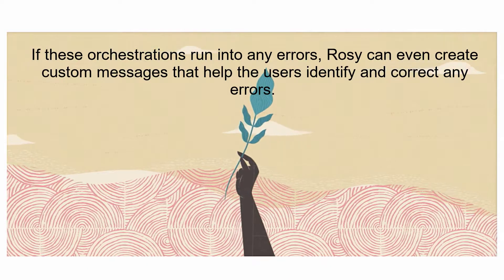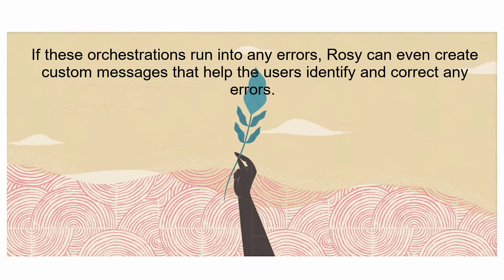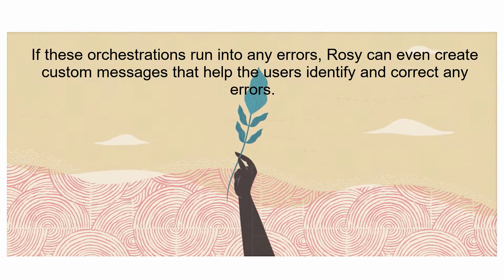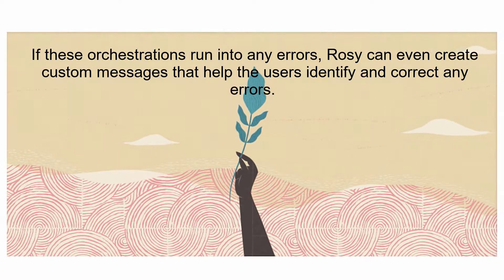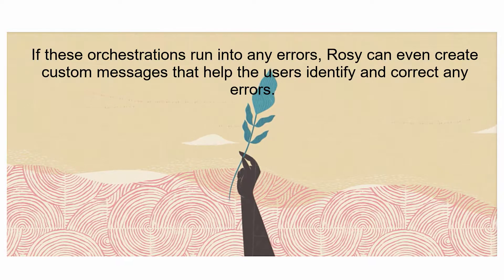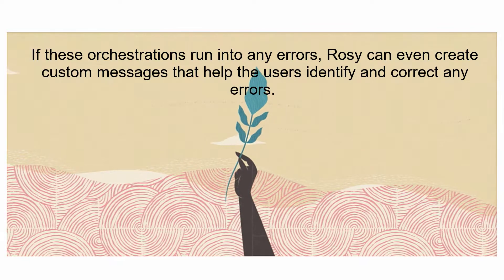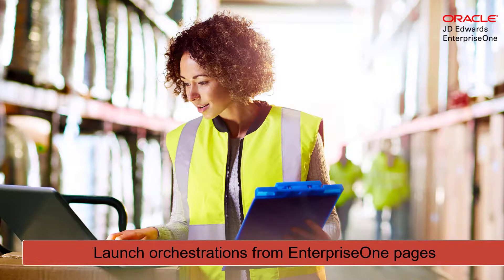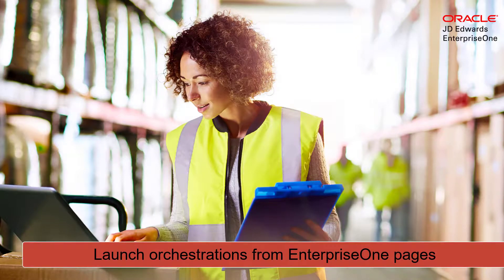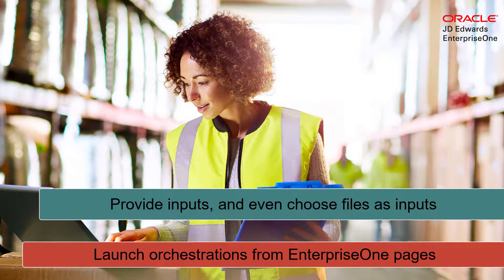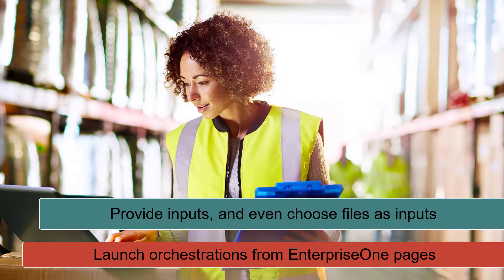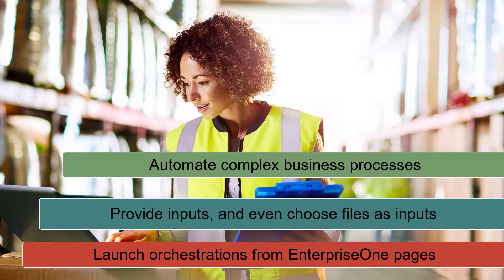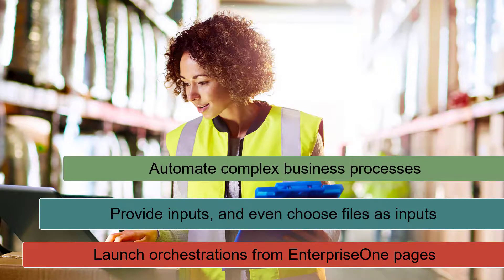Moreover, if these orchestrations run into any errors, Rosie can even create custom messages that help the user identify and correct any errors. With the capabilities to launch orchestrations from Enterprise One pages, provide inputs, and even choose a file as input, you can now automate even more of your complex business processes.